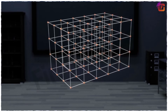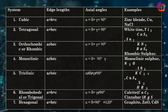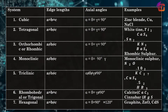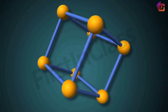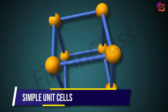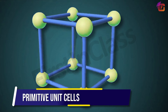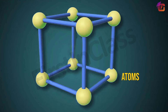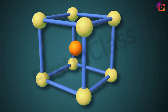Based on the different parameters of crystal lattices, there are seven types of crystal systems possible, as shown in the table here. The unit cells can be classified into two categories: one is primitive or simple unit cells, and another is centered unit cells. Primitive unit cells are those in which the atoms are present at the corners only. Centered unit cells are those which have particles at other positions as well, along with at the corners.